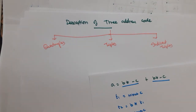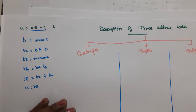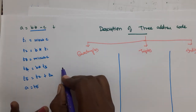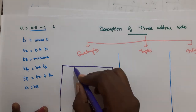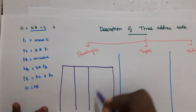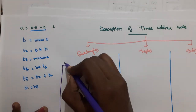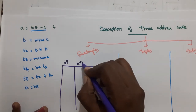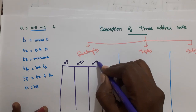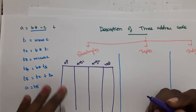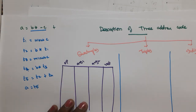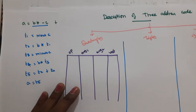We will see them one by one. In the case of a quadruple, 'quadruple' actually denotes four. So you will have four possible columns in the data structure: operator, argument 1, argument 2, and result column. When data are described in this structure, we call it a quadruple structure.